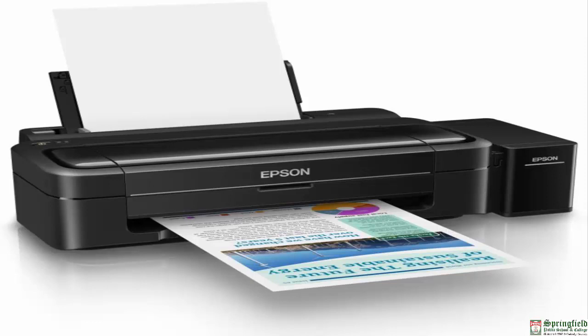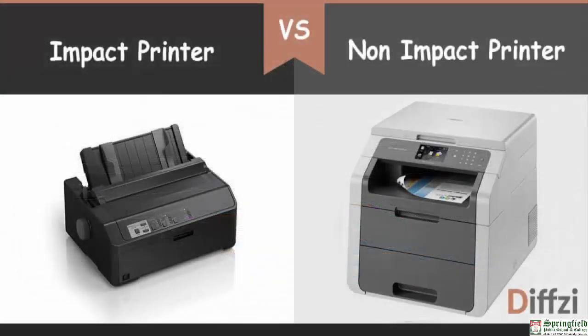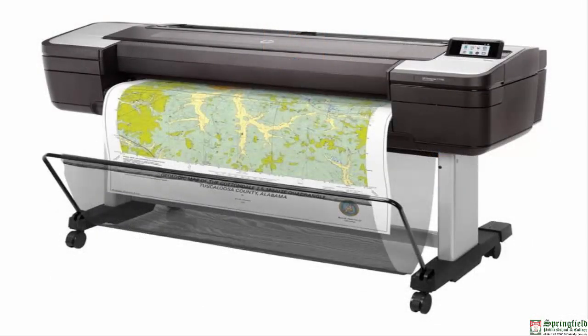A printer is an output device that prints text and graphics on paper, producing a hard copy. There are two types: impact printers and non-impact printers. Impact printers use an electromechanical mechanism that causes a character shape to strike the paper, leaving an image — the dot matrix printer is the most commonly used impact printer. Non-impact printers print without striking the paper and include two types: inkjet and laser printers.